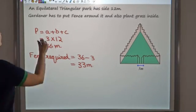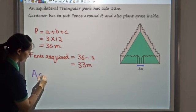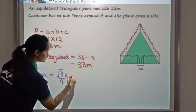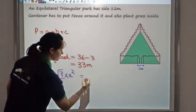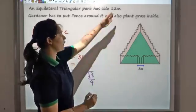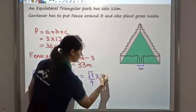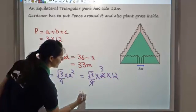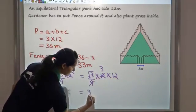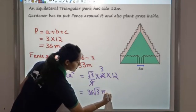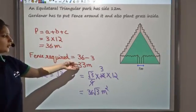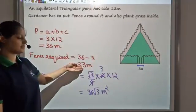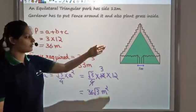Now let's find the area. Since it's an equilateral triangle, area = (√3/4) × A². With A = 12: area = (√3/4) × 12 × 12 = (√3/4) × 144. Since 4 goes into 144 giving 36, area = 36√3 m². So the fence needed is 33 metres, and the grass area needed to cover the park is 36√3 square metres.